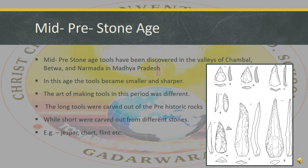Moving further, the second subcategory of Pre-Stone Age is Mid-Pre-Stone Age. Tools have been discovered in the valley of Chambal, Betwa, and Narendra in Madhya Pradesh. In this age, the tools became smaller and sharper. The art of making tools in this period was different — the long tools were carved out of pre-historic rocks, while short tools were carved out from different stones. Examples of Mid-Pre-Stone Age tools are Jasper, Chert, Flint, etc.